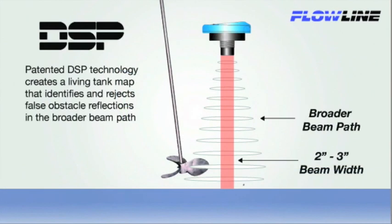Flowline's digital signal processing or DSP technology creates a living tank map that identifies false obstacle reflections in the full beam path.